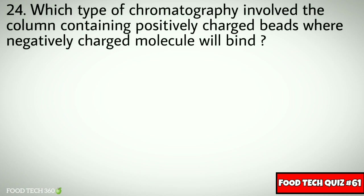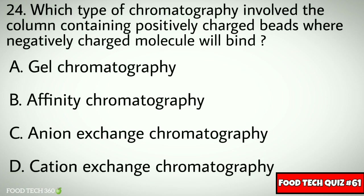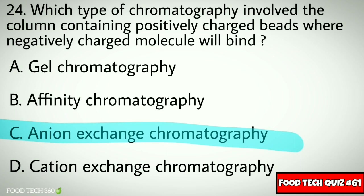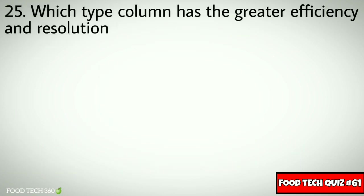Question number twenty-four: which type of chromatography involves a column containing positively charged beads where negatively charged molecules will bind? Options: a) gel chromatography, b) affinity chromatography, c) anion exchange chromatography, d) cation exchange chromatography. Correct answer: c) anion exchange chromatography.